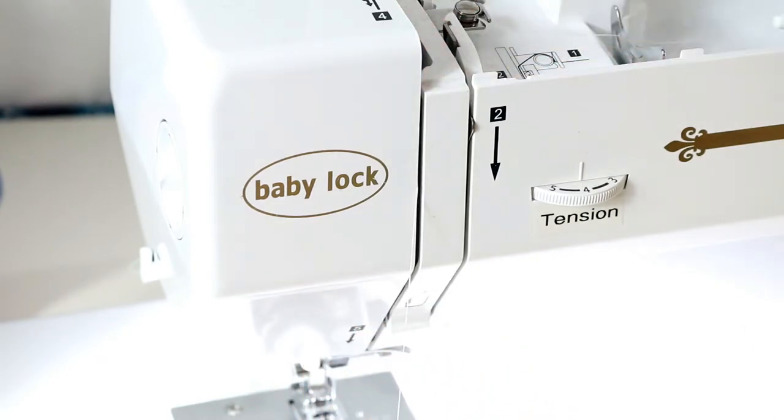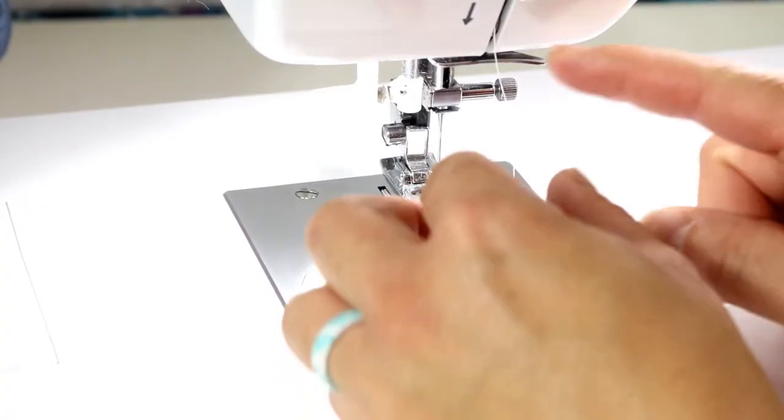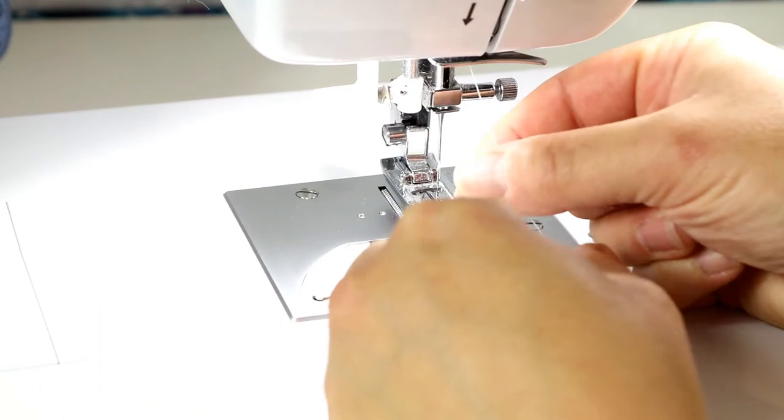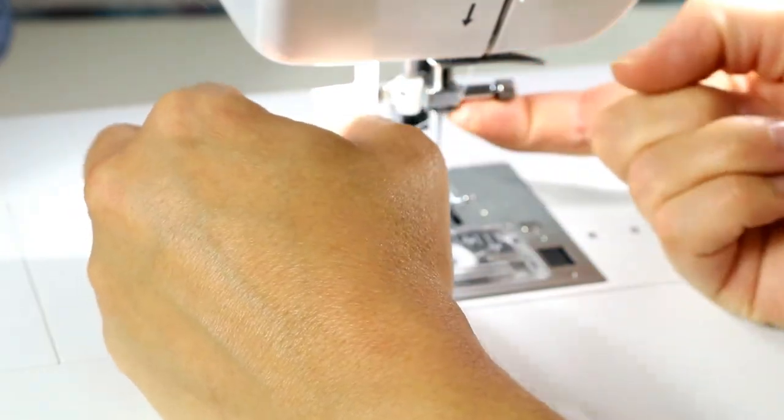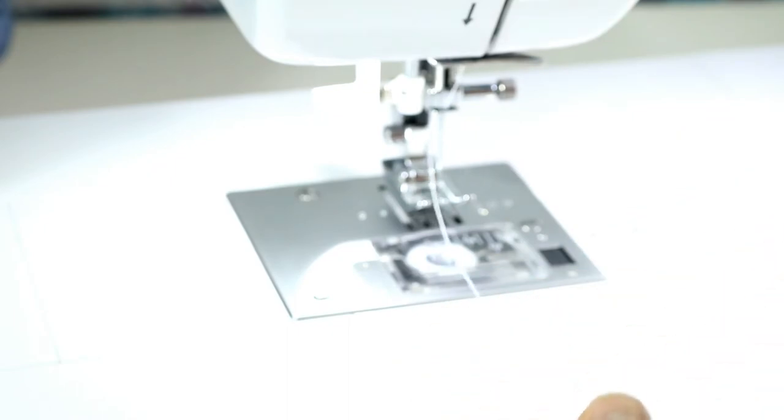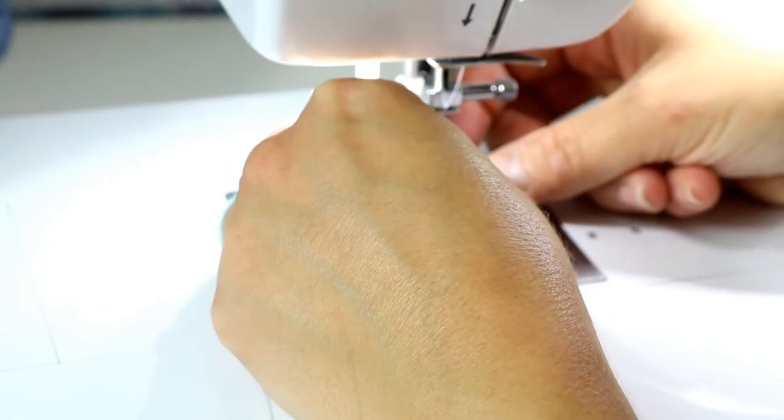So that metal piece holds the thread in place. You're going to come down here. At this point, it goes around here. And there's a little area where you have a little hook next to the needle. And then you can put it through the eye of the needle.